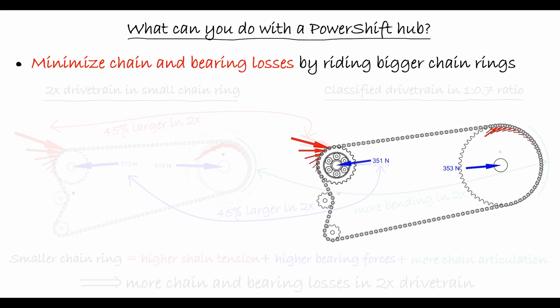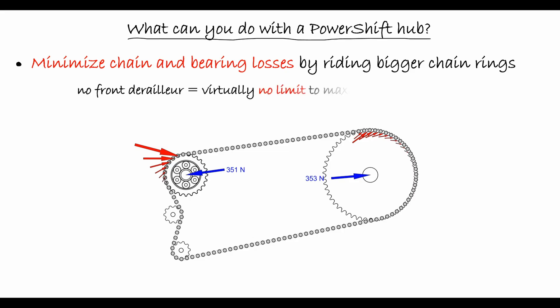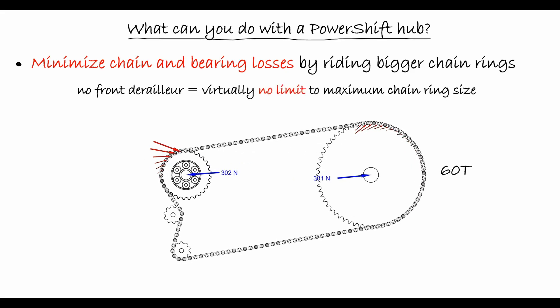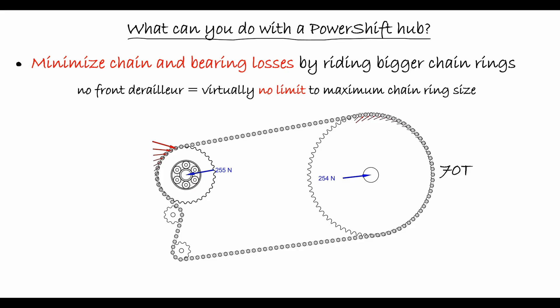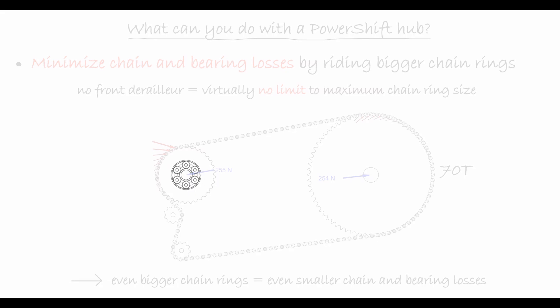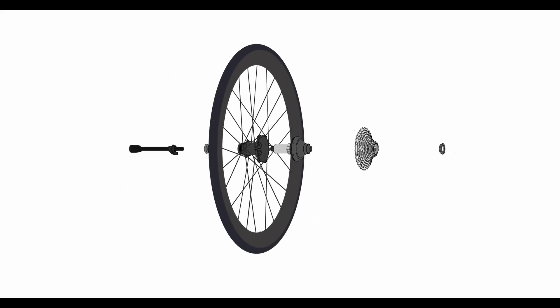With the front derailleur out of the way and no more need to derail the chain between chainrings, there is virtually no limit to how big a chainring one can use in a PowerShift drivetrain. One can even mount a 70-teeth chainring. The larger the chainring, the smaller the chain and bearing losses in the drivetrain, which might just be the edge you need to win your next race.